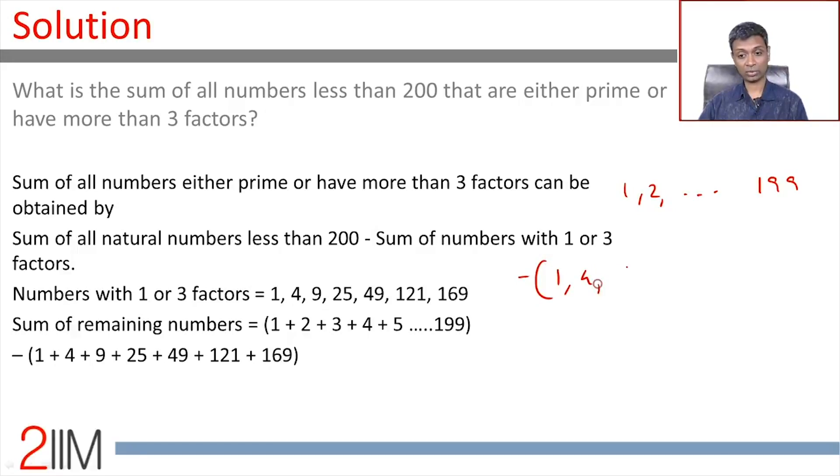2 square is 4. 3 square is 9. 4 square we won't subtract, that's 16. That has 5 factors. 4 is not prime. 25. 49, 7 square. 121, 11 square. And 169, 13 square. So I add all of these numbers.